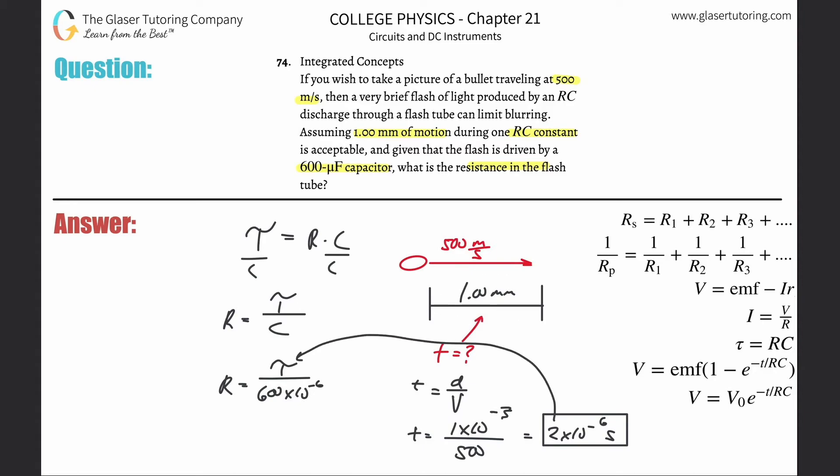That's the time of which we have to emit this flash, right? So that's 2 times 10 to the minus 6, all divided by 600 times 10 to the minus 6. Those minus 6 will basically cancel, and you can basically just take 2 divided by 600, and this works out to be 3.33 times 10 to the minus 3 ohms, or about 3.33 milliohms. And that's it, that's the resistance.